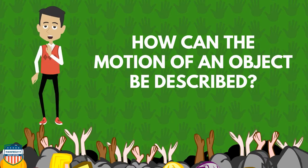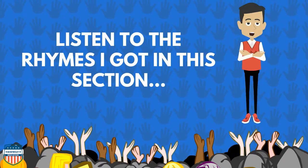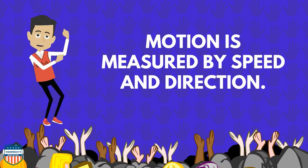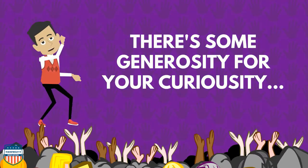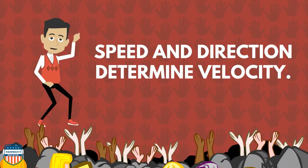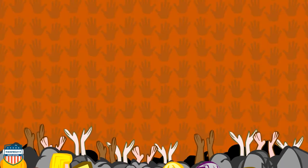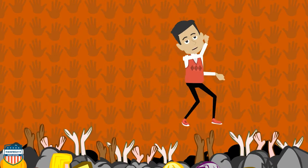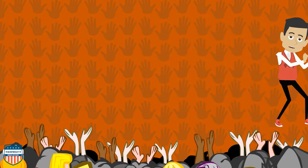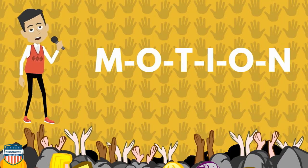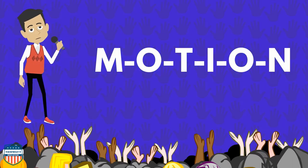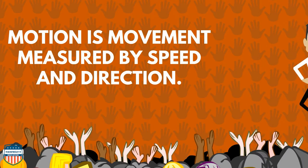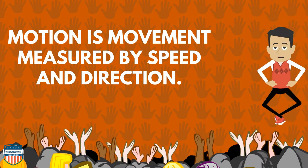How can the motion of an object be described? Listen to the rhymes I got in this section. Motion is measured by speed and direction. Here's some generosity for your curiosity — speed and direction determine velocity. That's right. M-O-T, M-I-O-N. Motion is measured by speed and direction.